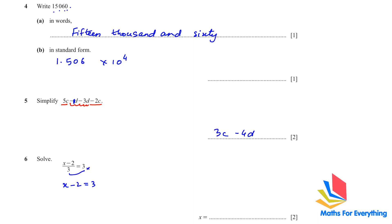Question 6: solve for x. The 3, when moved to the other side, becomes a multiply, so x minus 2 equals 9. The 2, when shifted to the other side, becomes positive 2, so x equals 11.